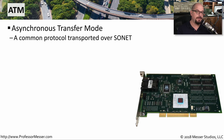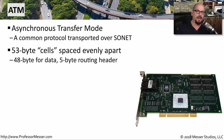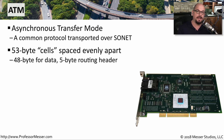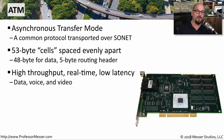ATM stands for Asynchronous Transfer Mode, and it's a way of communicating over a SONET network. ATM didn't use frames or packets — it used 53-byte cells. Every bit of data put onto an ATM network was 53 bytes in length: 48 bytes for the data and five bytes for a header. This provided high throughput, real-time communication, and very low latency, because you knew exactly when the next 53-byte cell would come through the network.